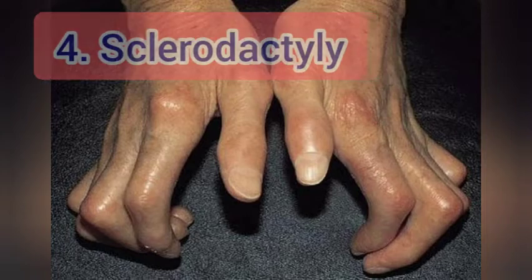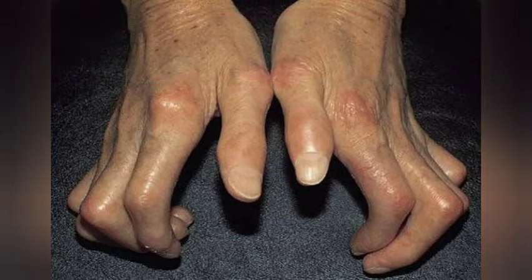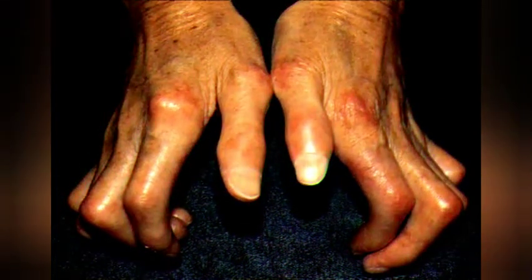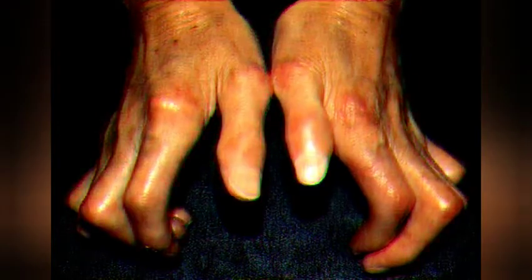Number 4: S for sclerodactyly — that is thickening and tightening of the skin on the fingers and hands.